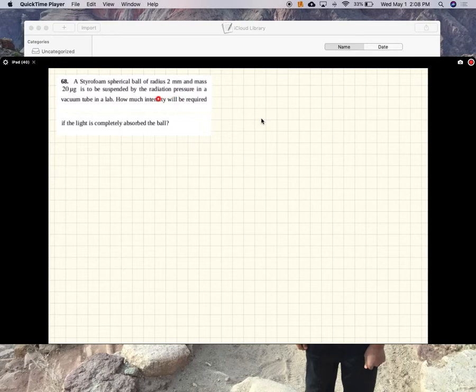Okay, so a styrofoam spherical ball of radius 2 millimeters and mass 20 micrograms is to be suspended by radiation pressure in a vacuum tube in a lab. How much intensity will be required if the light is completely absorbed?